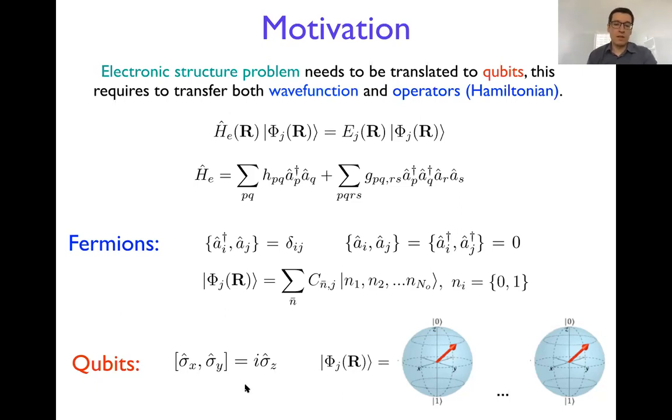They have different commutation relations. For example, here the commutator of x and y gives you i times z, right? And those are different relations. And the wave functions for the qubits also can be written as a linear combination of products for different qubit wave functions.